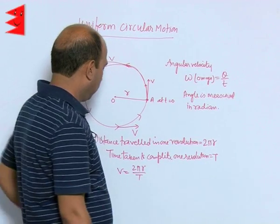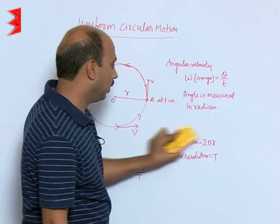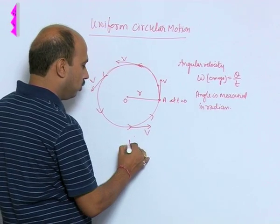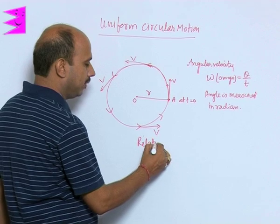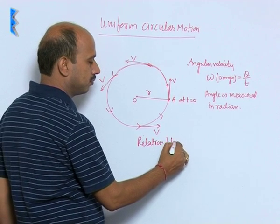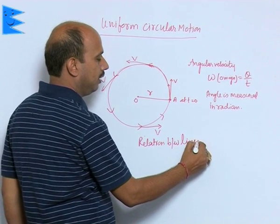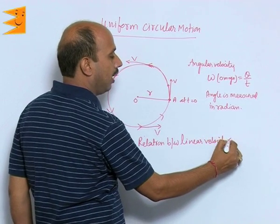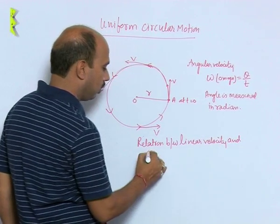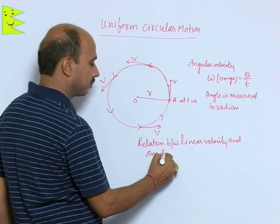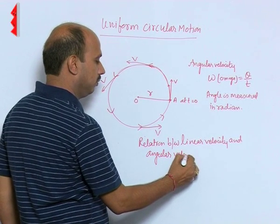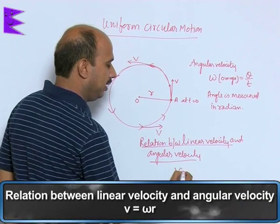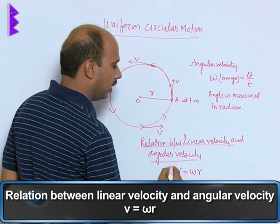So this is about angular velocity and V is known as linear velocity. So we can also write relation between linear velocity and angular velocity.